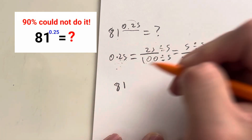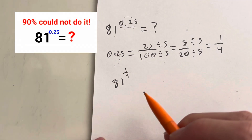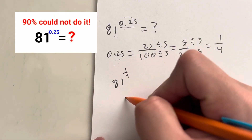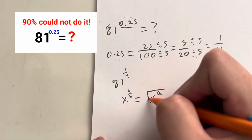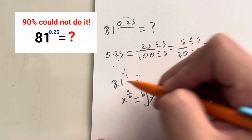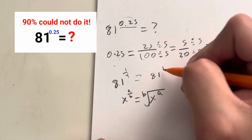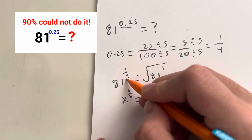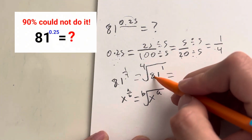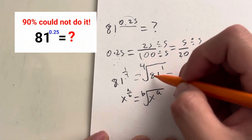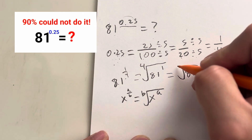So we can write this as 81 to the 1 fourth power. When you have a fractional exponent — say x to the a over b — this is the same as the b-th root of x to the a. So in this case, we take our base of 81 to the first power under the fourth root. Any number to the first power is always itself, so this is just the fourth root of 81.